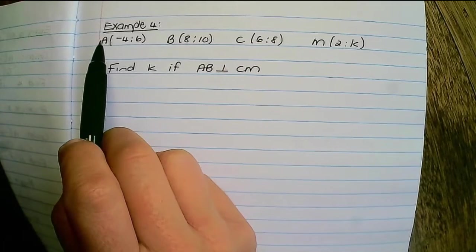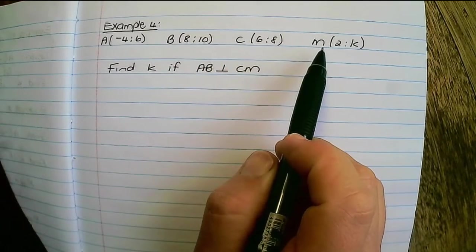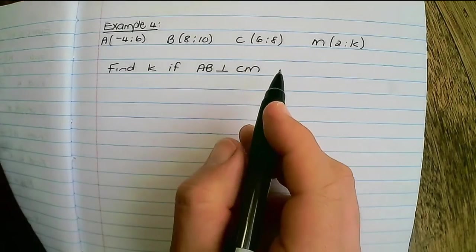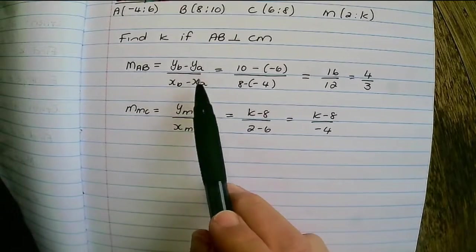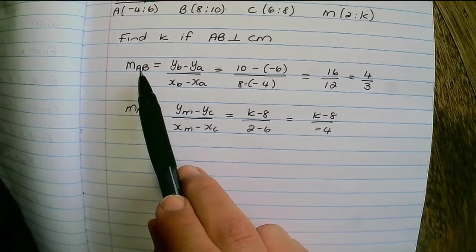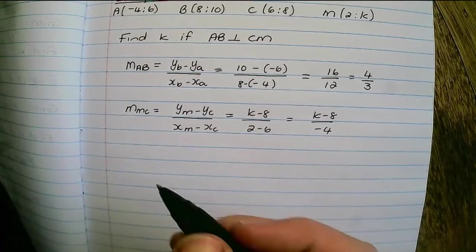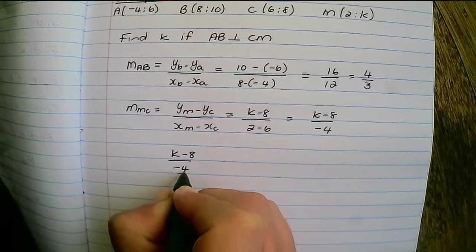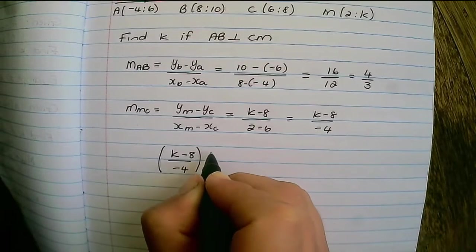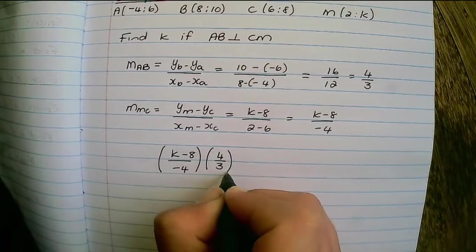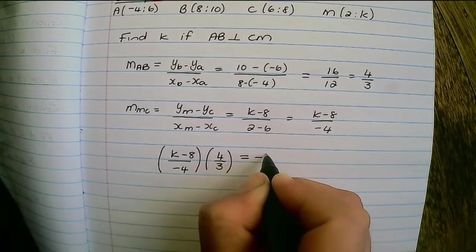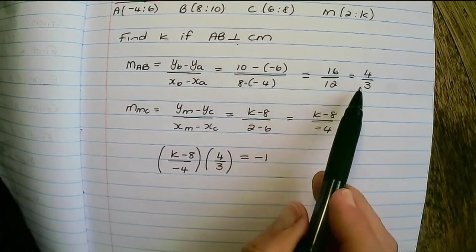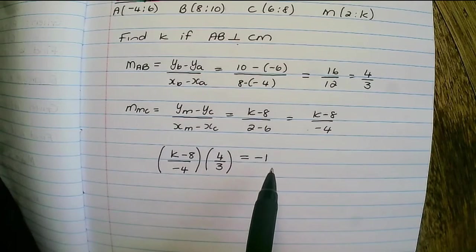In this example we have the same four coordinates as before, and now we want to find k if AB is perpendicular to CM. As before, we find the two gradients of lines AB and MC. But now that they are perpendicular, k minus 8 over negative 4 multiplied with 4 over 3 must equal negative 1, because for perpendicular lines the product of the gradients equals negative 1.